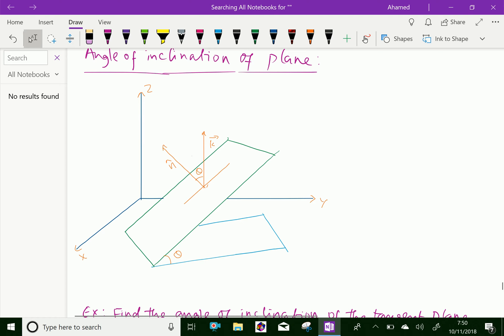Suppose the first plane is on the XY plane, means it is parallel to XY plane. Here the N vector is normal to the second plane and vector K is in Z axis, means parallel to Z axis.